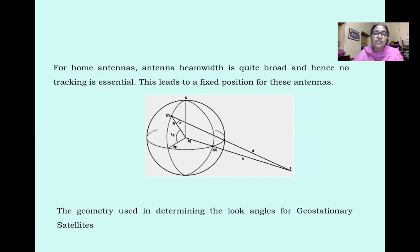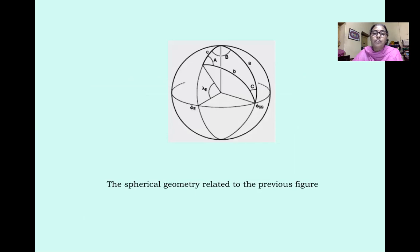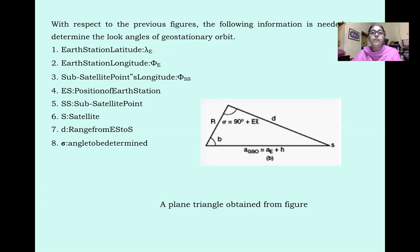For home antennas, the beam width is quite broad and hence no tracking is essential, leading to a fixed position for these antennas. The geometry used in determining the look angles for geostationary satellites is shown in figures involving spherical geometry in three dimensions, and this look angle for geostationary orbit can be represented in the form of a plane triangle obtained from those figures.